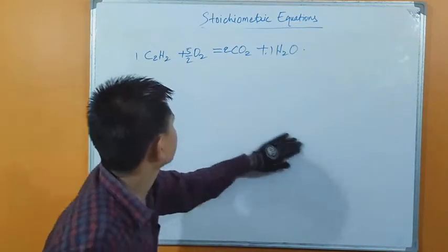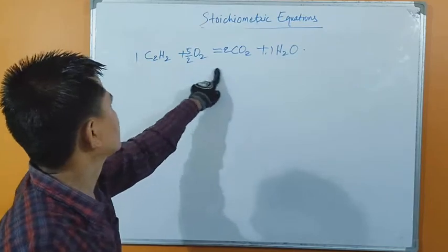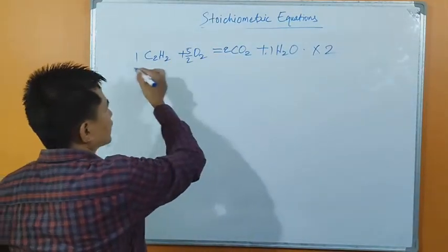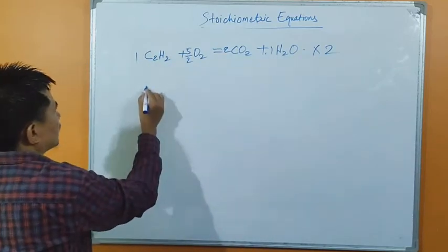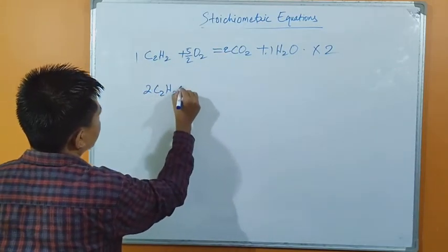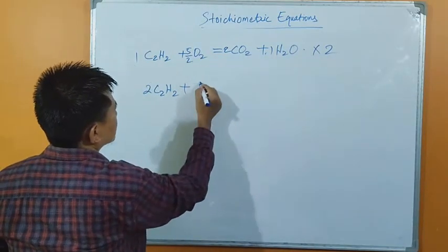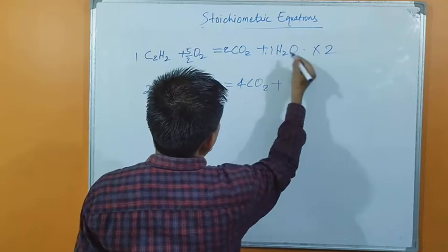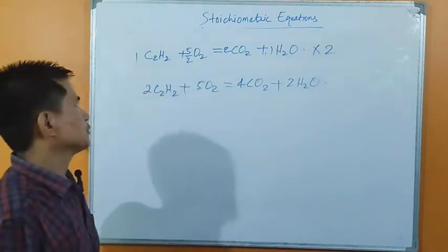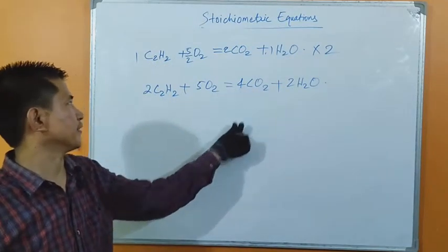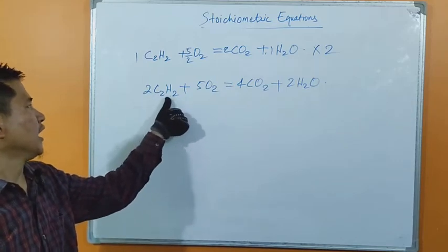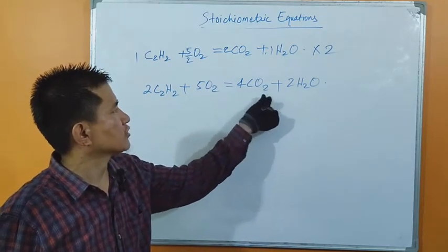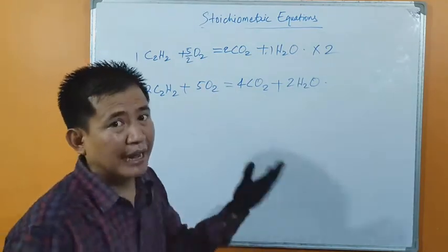Since there is a 2 in the denominator, we multiply the whole equation by 2. We get: 2C₂H₂ + 5O₂ → 4CO₂ + 2H₂O. This equation is balanced. Carbon: 2 × 2 = 4 on both sides; hydrogen: 2 × 2 = 4 on both sides; oxygen: 5 × 2 = 10, and 4 × 2 + 2 = 10 on both sides. Balanced.